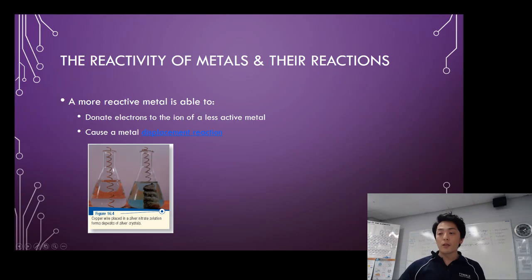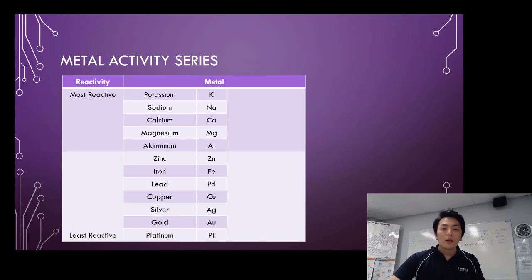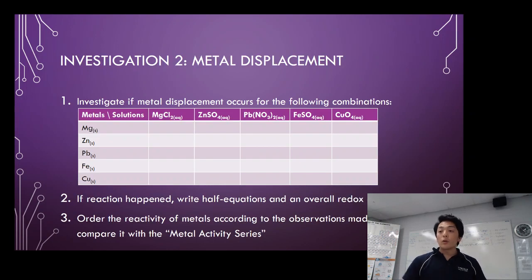Moving on. Now you will also do the metal displacement investigation. So you will add these metals - magnesium, copper - into these solutions and see which one would cause reaction. And if a reaction happens, i.e., a metal displacement occurs, then you should be able to write half equations and overall equation.